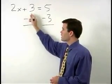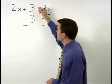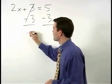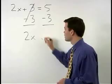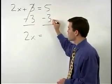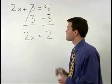On the left, plus 3 minus 3 cancels, and we're left with 2x. On the right, 5 minus 3 simplifies to 2.